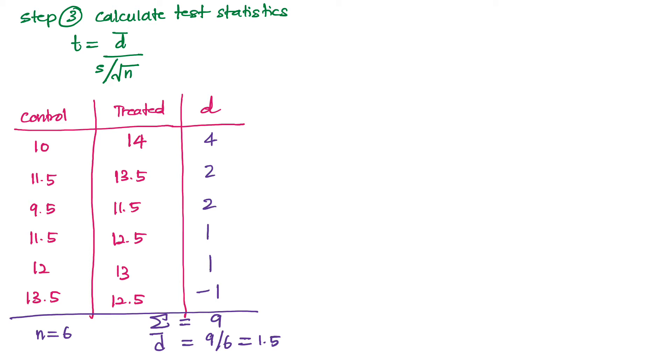The d-bar can be obtained by finding the difference for every pair. So we can see here that the original data given to us, the control and the treated samples, and the d for each pair is obtained by subtracting the two samples. So for example for the first pair we have the difference of four, and the second, and so on. So at the end we have to sum up all the differences and we have to find what is the average of the difference, that is nine divided by six which is the number of pairs in this case.